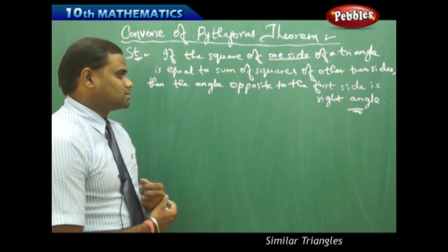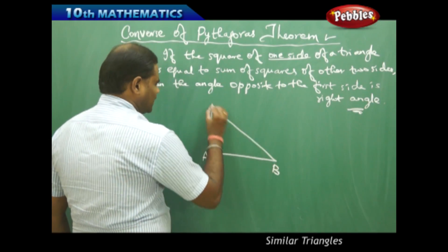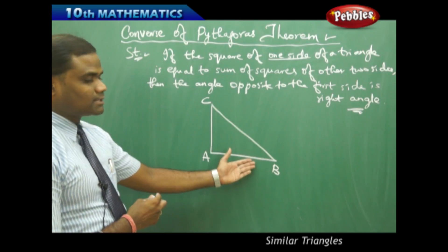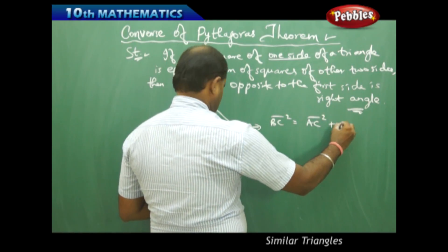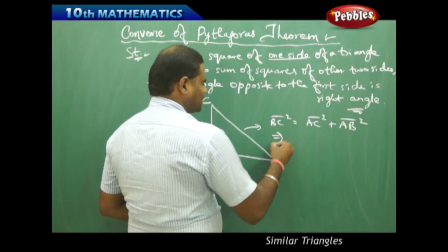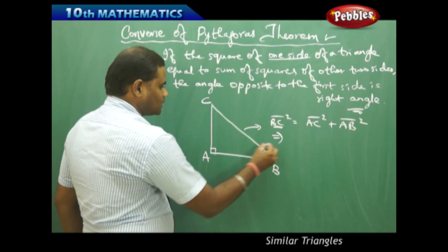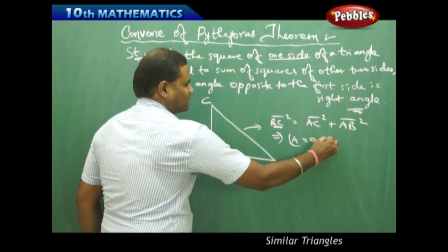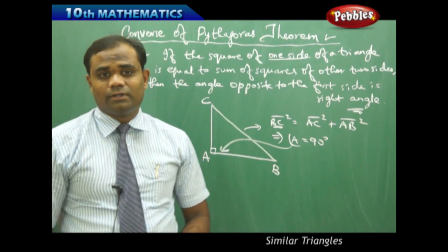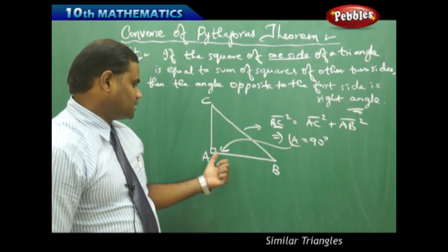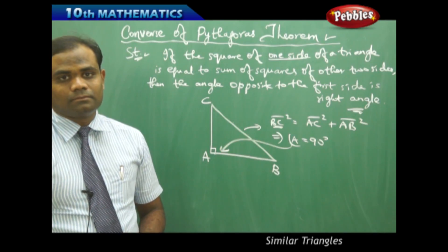Let's take triangle ABC. If the square of BC equals the square of AC plus the square of AB, then the angle opposite to BC — that is, angle A — will be 90 degrees. This is what the statement of the converse of the Pythagorean theorem refers to. Therefore, we need to prove that angle A is 90 degrees using the converse.